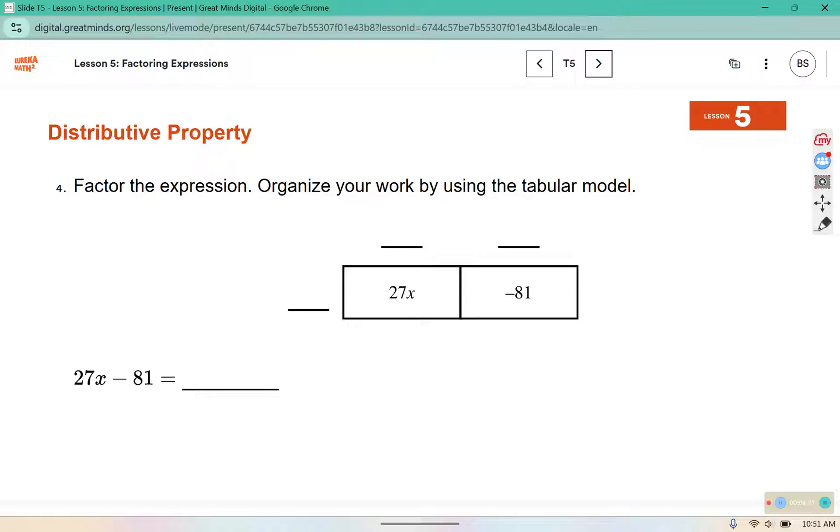Factor the expression. Organize your work by using a tabular model. Well, I know that 9 can fit into both of those, but 27 can as well. 27 times x is 27x, and 27 times negative 3 is negative 81.